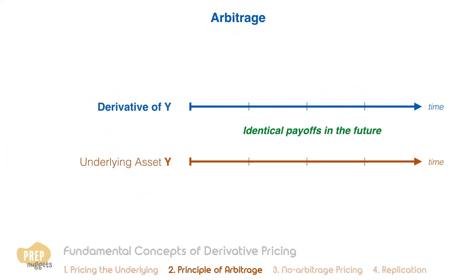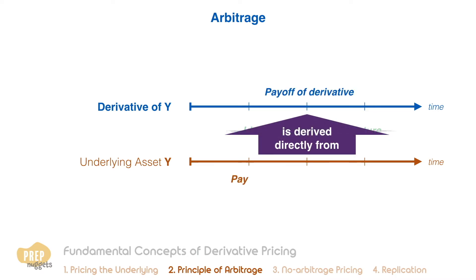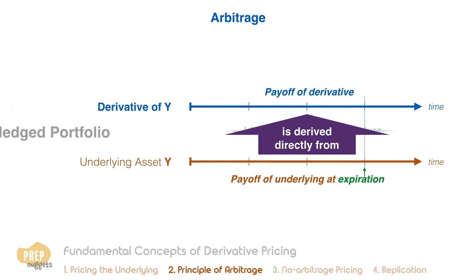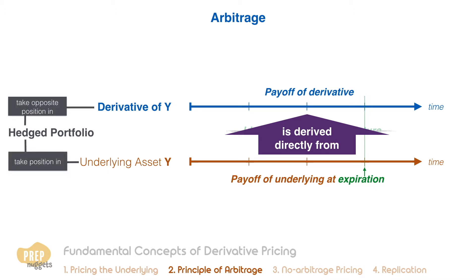For most derivatives, the payoffs may not be identical, but they come directly from the value of the underlying at the expiration of the derivative. Although no one can predict with certainty the value of the underlying at expiration, as soon as that value is determined, the value of the derivative at expiration becomes certain. This property of derivatives allows investors to construct hedged portfolios — by taking a position in the underlying and taking the opposite position in the derivative at the same time, creating a portfolio with no uncertainty about its value at some future date.